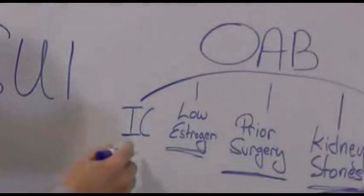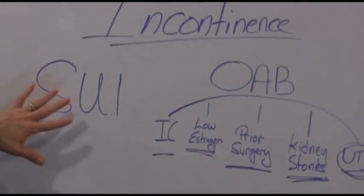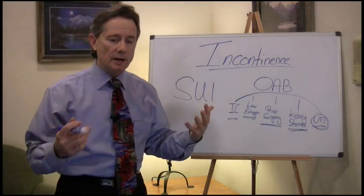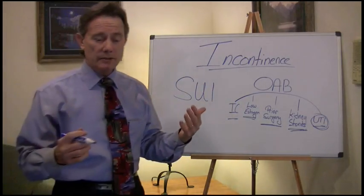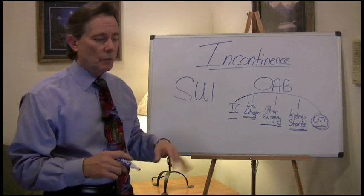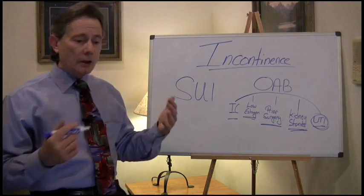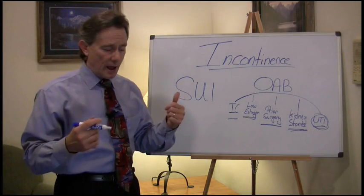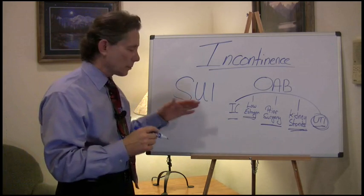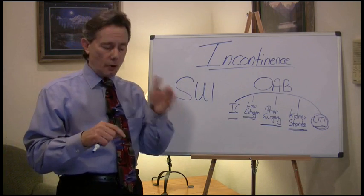So when we look at the two types, you have overactive bladder and you have stress incontinence. When somebody comes to me and says they have incontinence, the first question I'm going to ask is: are you leaking when you cough, laugh, or sneeze? If you are, then we're starting to think about stress incontinence. I'll also ask about exercise — how about when you jump up out of a chair? If you're leaking like that, what that's telling me is that your bladder is starting to drop.